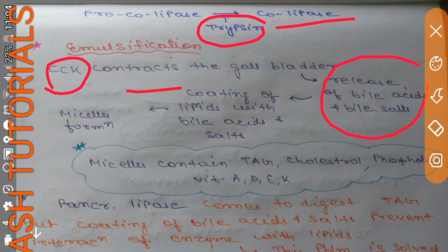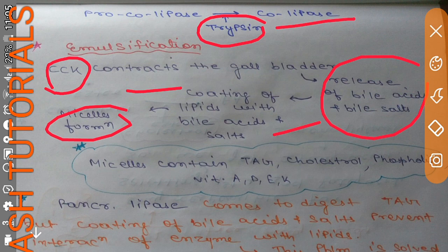The coating of bile acids and bile salts around the lipid leads to the formation of micelles — this process is known as emulsification. Micelles mainly contain triacylglycerol, cholesterol, phospholipids, and vitamins A, D, E, and K.